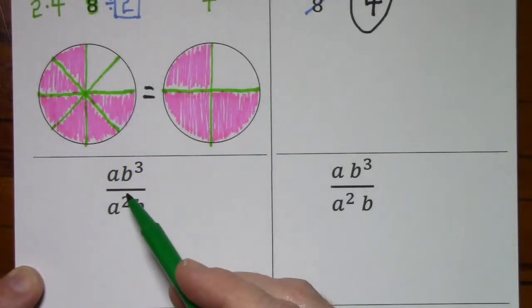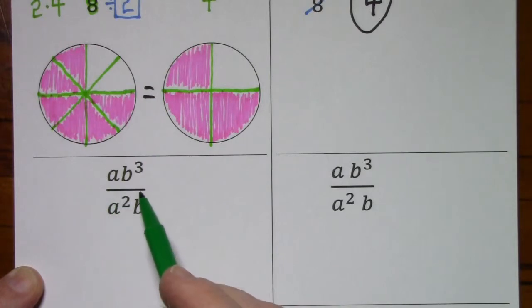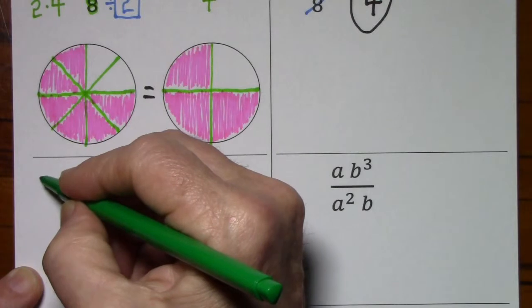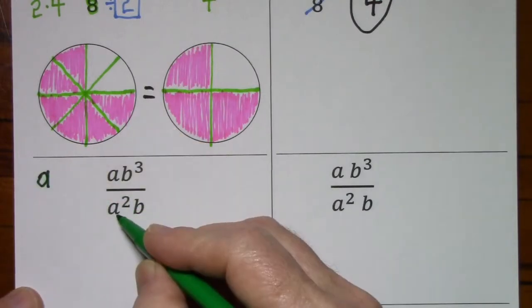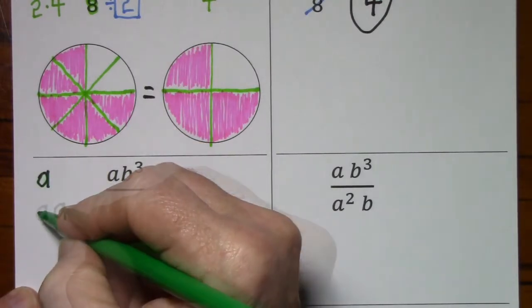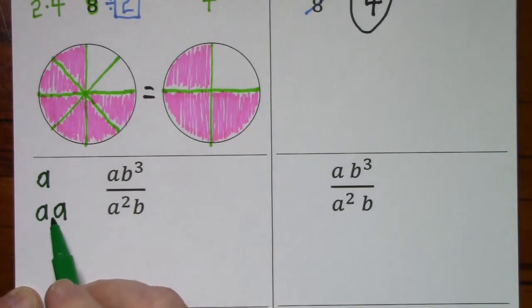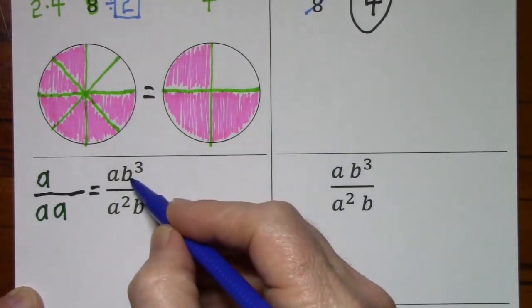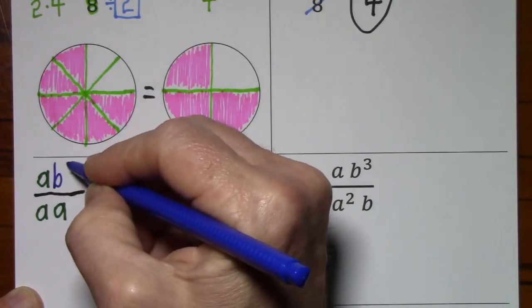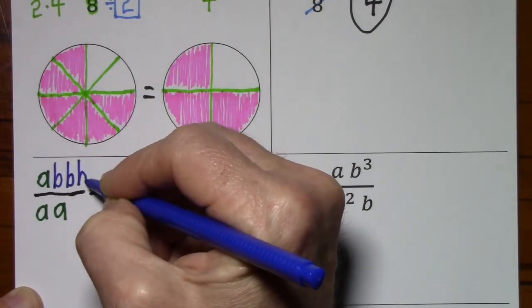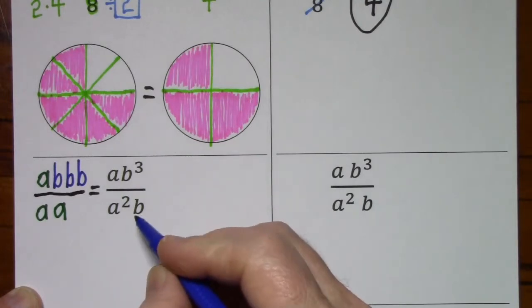I can't represent variables with these circles, but I can write them in factored form. So a, well that's simply a. a squared, that's a times a, and I don't have to put a dot. A letter next to a letter means to multiply. b to the third, b times b times b, over b.